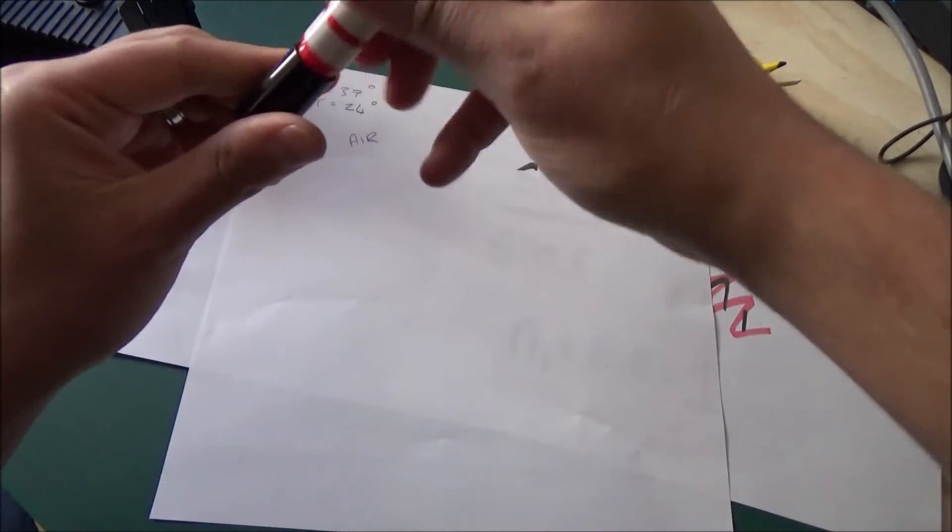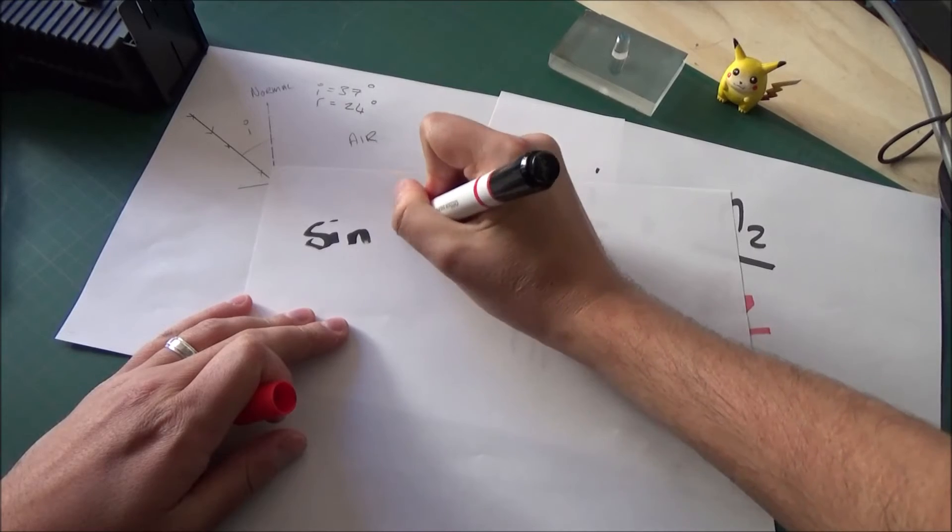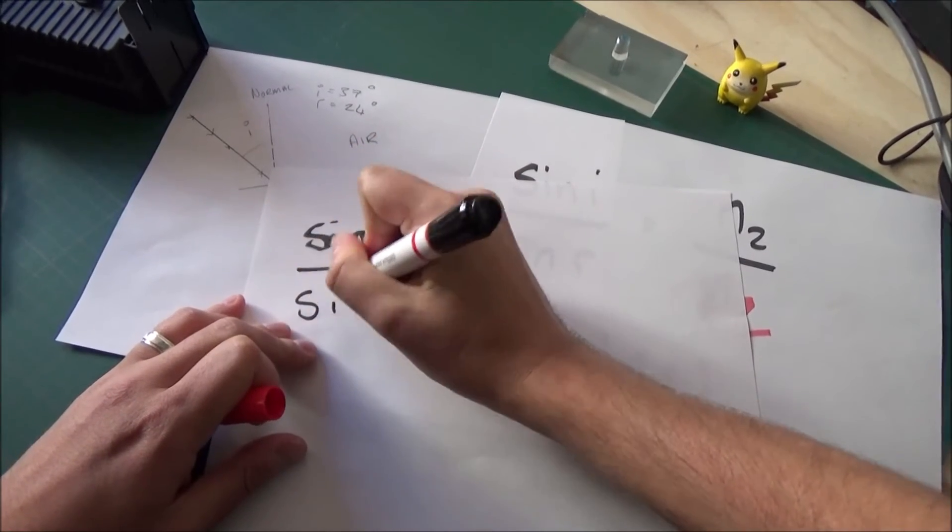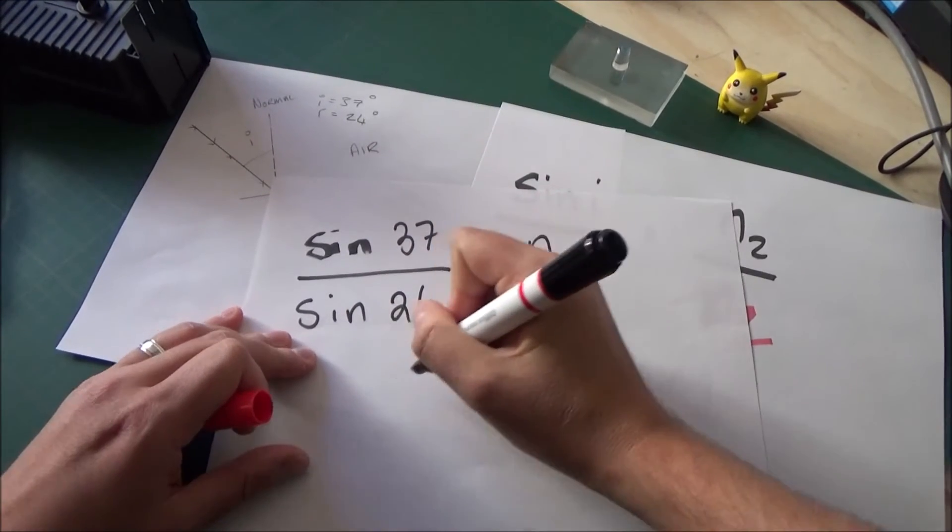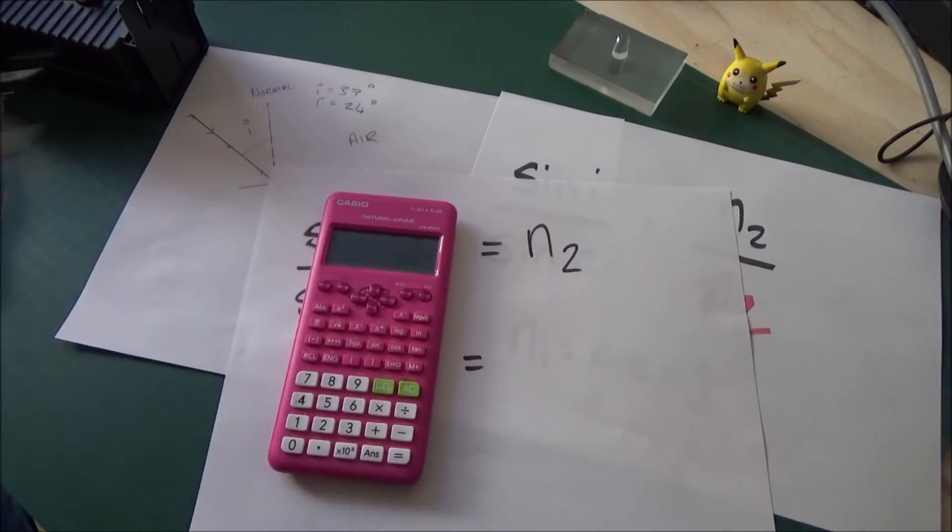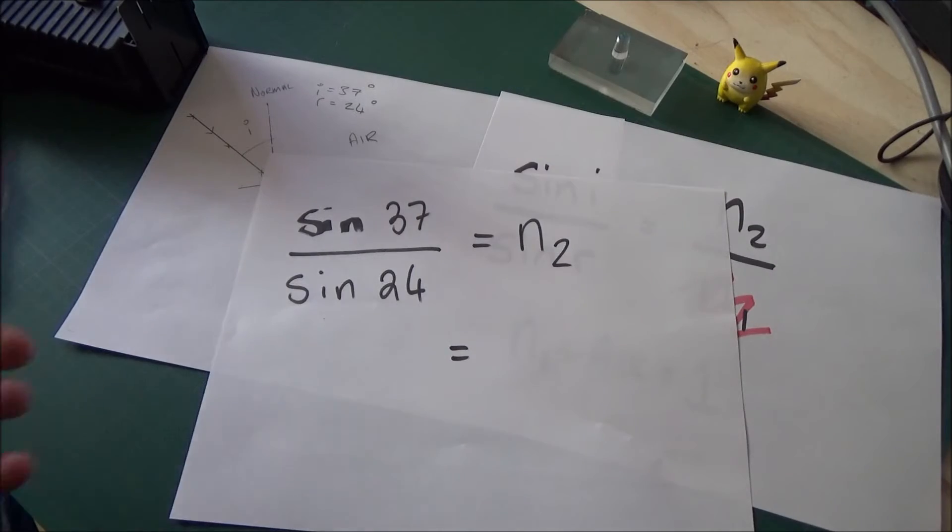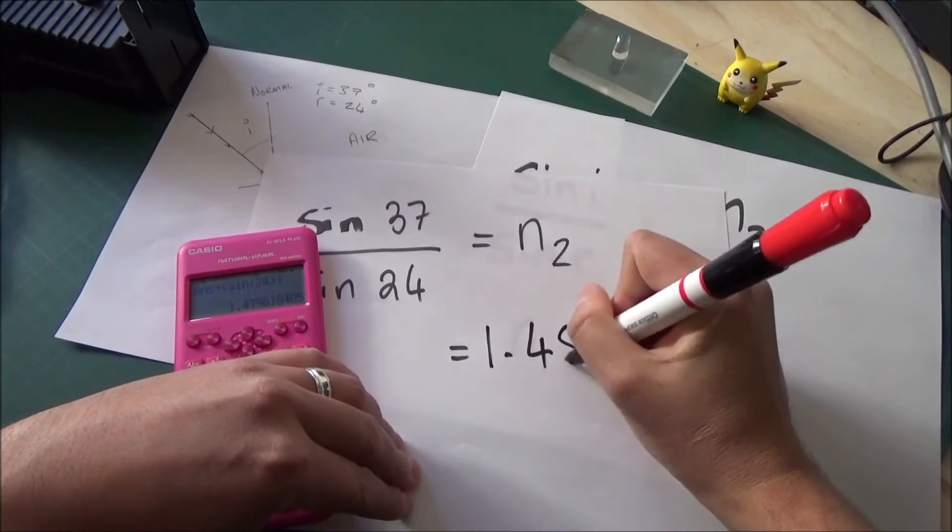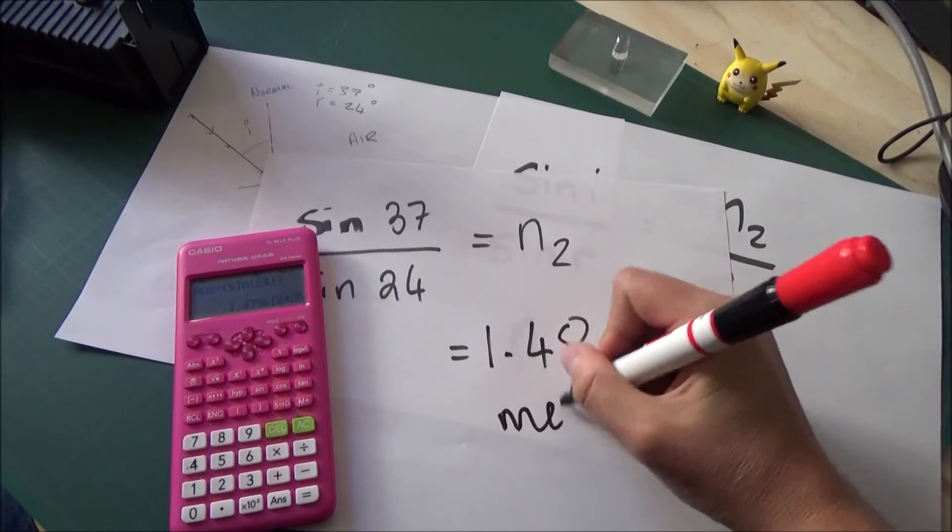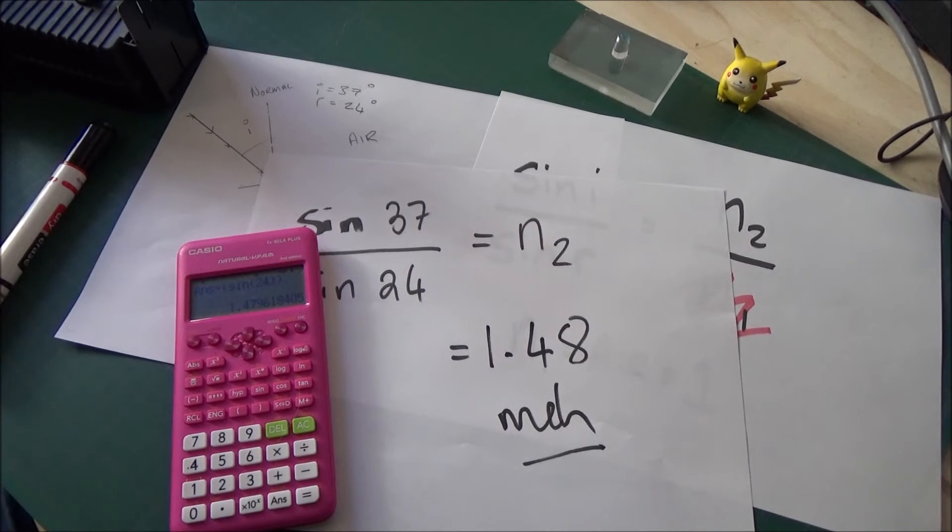So, in this case, we're going to have sin of 37 divided by sin of 24 will give us our refractive index for the perspex. We'll grab a calculator, make sure it's set into degrees, not radians. And when we put those values in, we get a value of 1.48 to two decimal places. That's okay. It's not brilliant. There are more precise ways of doing this, and we're going to look at the following two methods that give you a much more precise value for that refractive index.